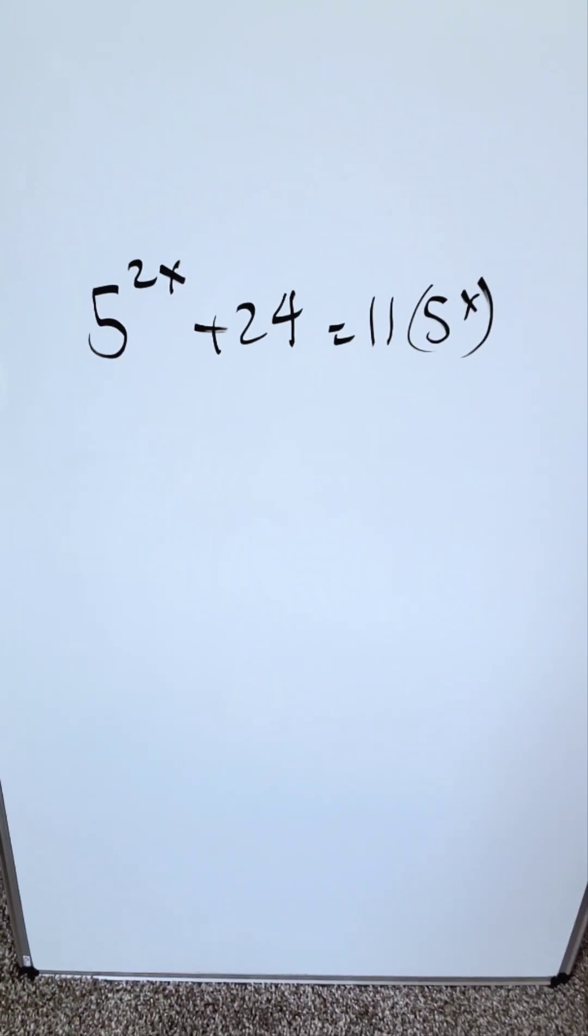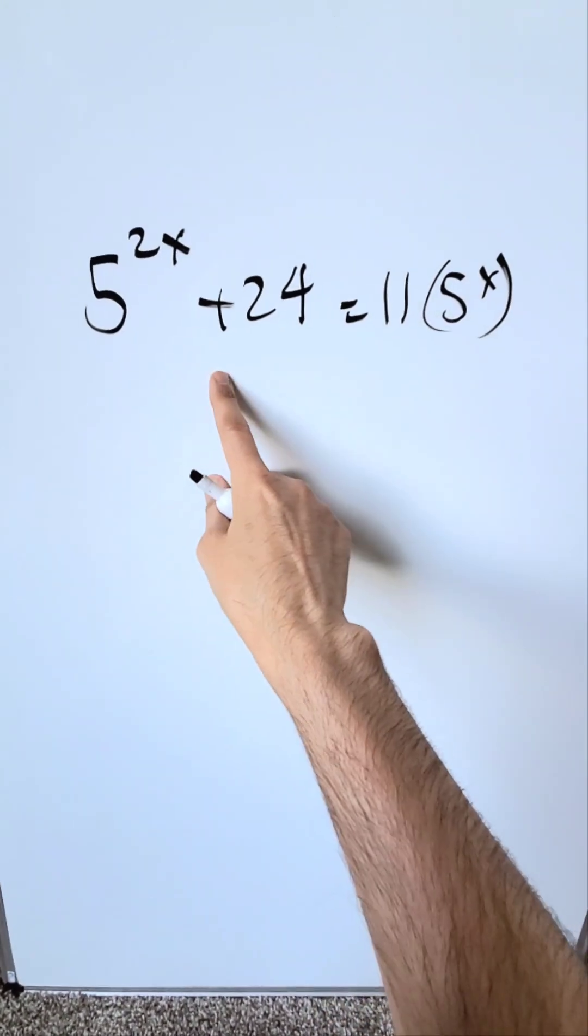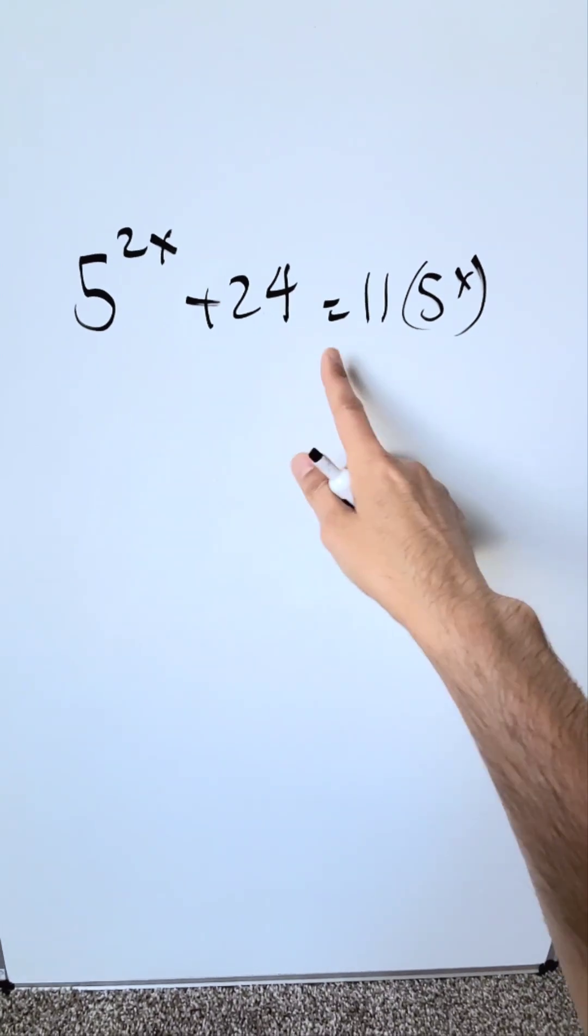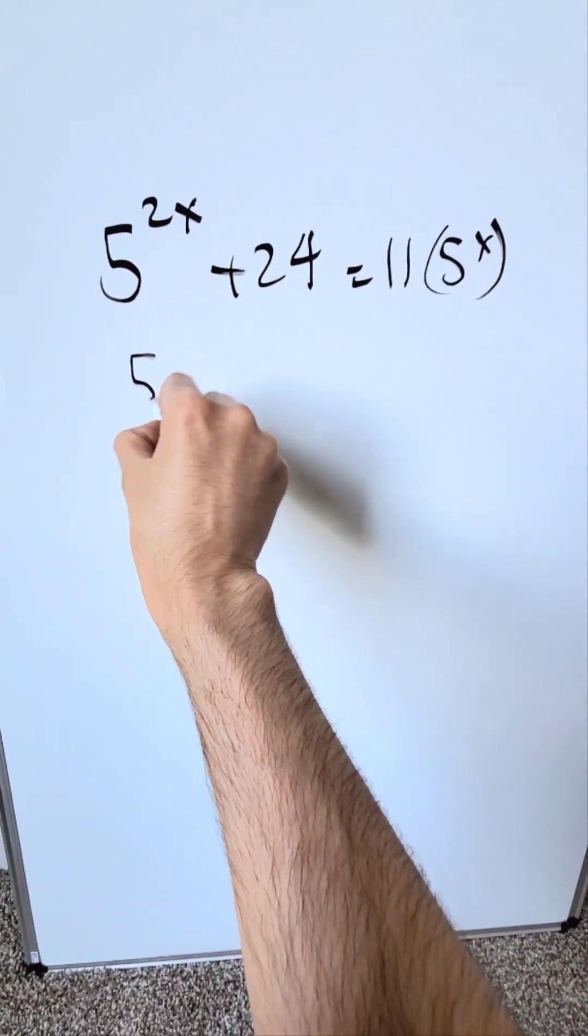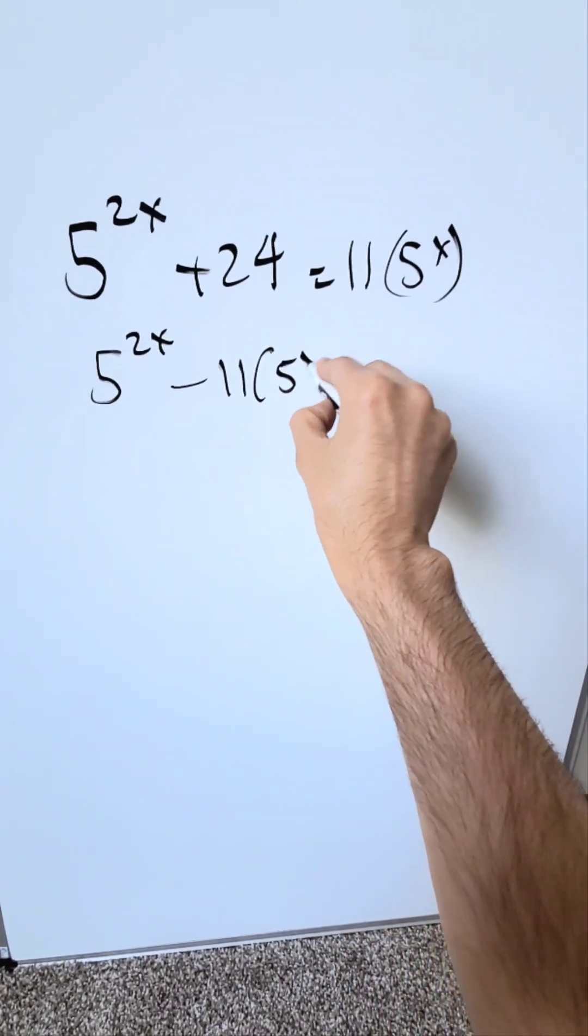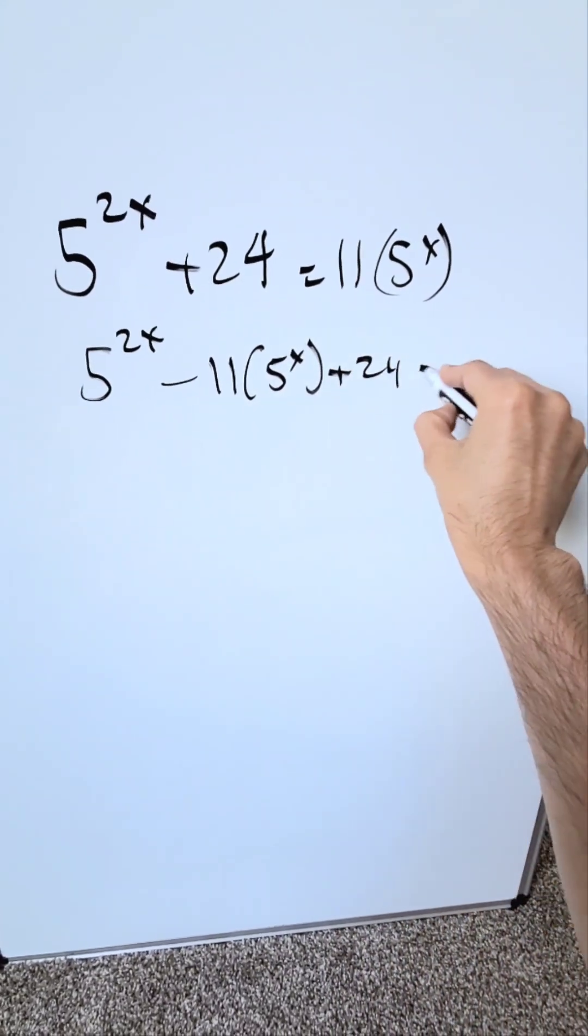We are looking here at this expression: 5 to the power of 2x plus 24 is equal to 11 times 5 to the power of x. Push everything onto one side, make everything equal to 0. 5 to the power of 2x minus 11 times 5 to the power of x plus 24 is equal to 0.